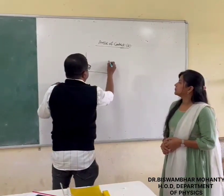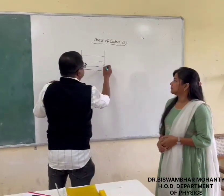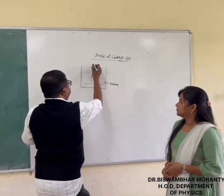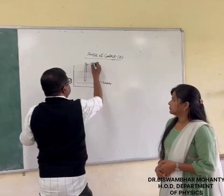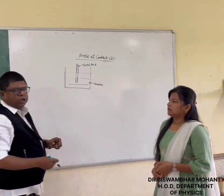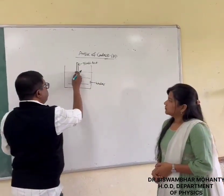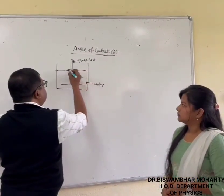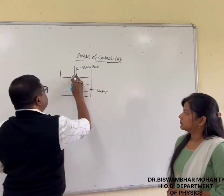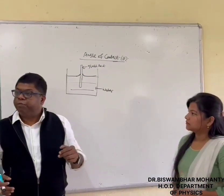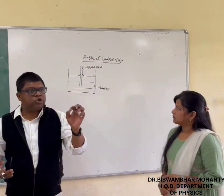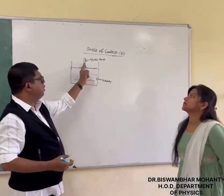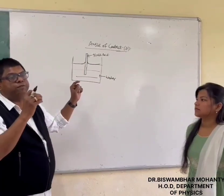Suppose water is present, taken inside a container. At the point of contact between the water and glass, the level is slightly elevated. The point of contact is slightly elevated because there is a force of adhesion between the dissimilar molecules — in this case, the glass molecule and water molecule. That is the force of adhesion.